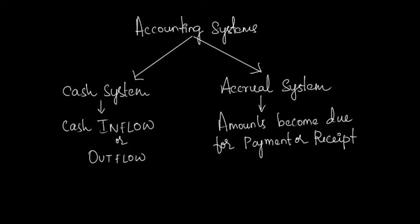Cash system is a system where only cash inflows and outflows are recorded, whereas in case of mercantile or accrual system, not only cash inflows and outflows but also receivables and payables are recorded.